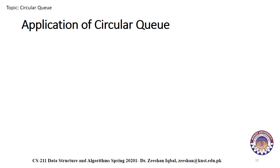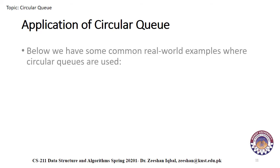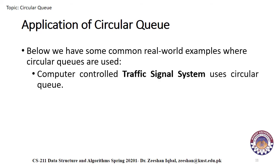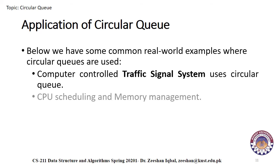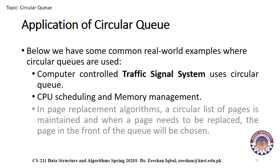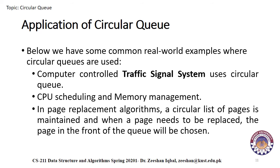There are various applications of circular queues. Some common real-world examples include: computer-controlled traffic signal systems use circular queues; CPU scheduling and memory management use circular queues; and in operating systems, in the page replacement algorithm, a circular list of pages is maintained, and when a page needs to be replaced, the page at the front of the queue is removed.